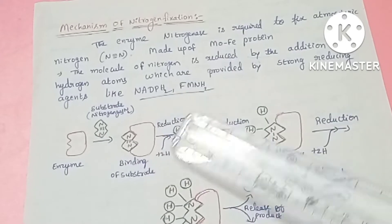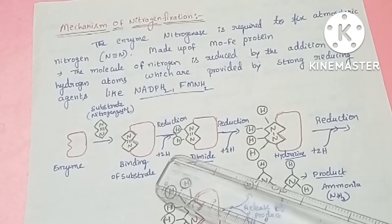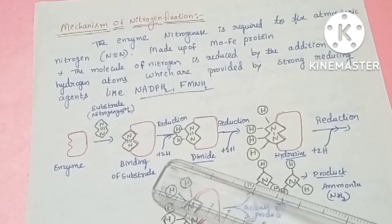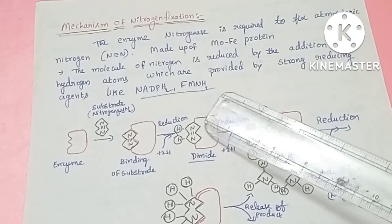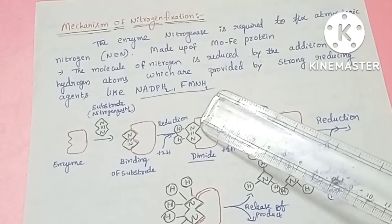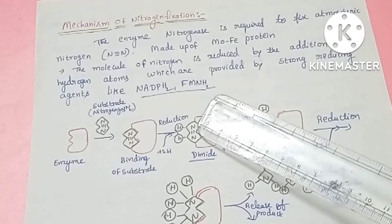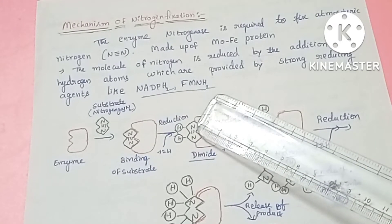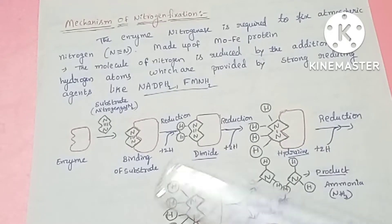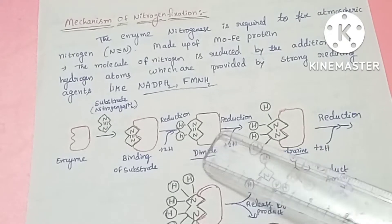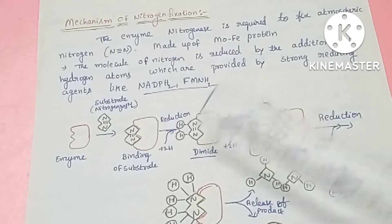After binding, in the first reaction, two protons are added. This starts the first reduction step, breaking one of the three covalent bonds so that nitrogen goes from three covalent bonds to two covalent bonds. It will become diazene, that is N₂H₂.